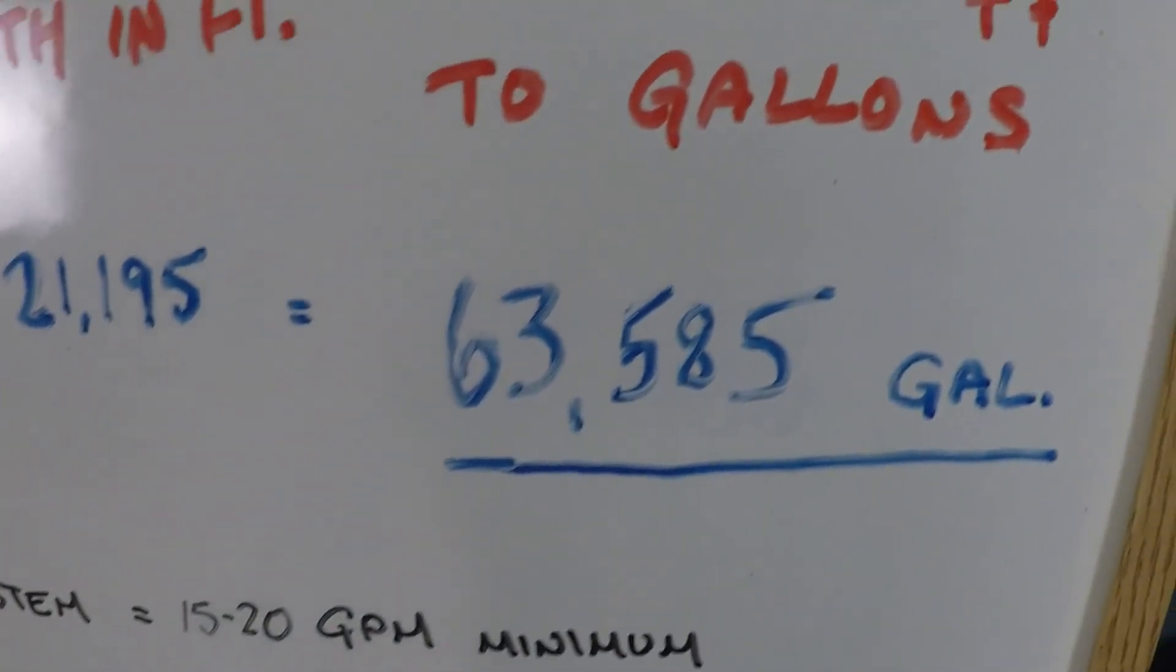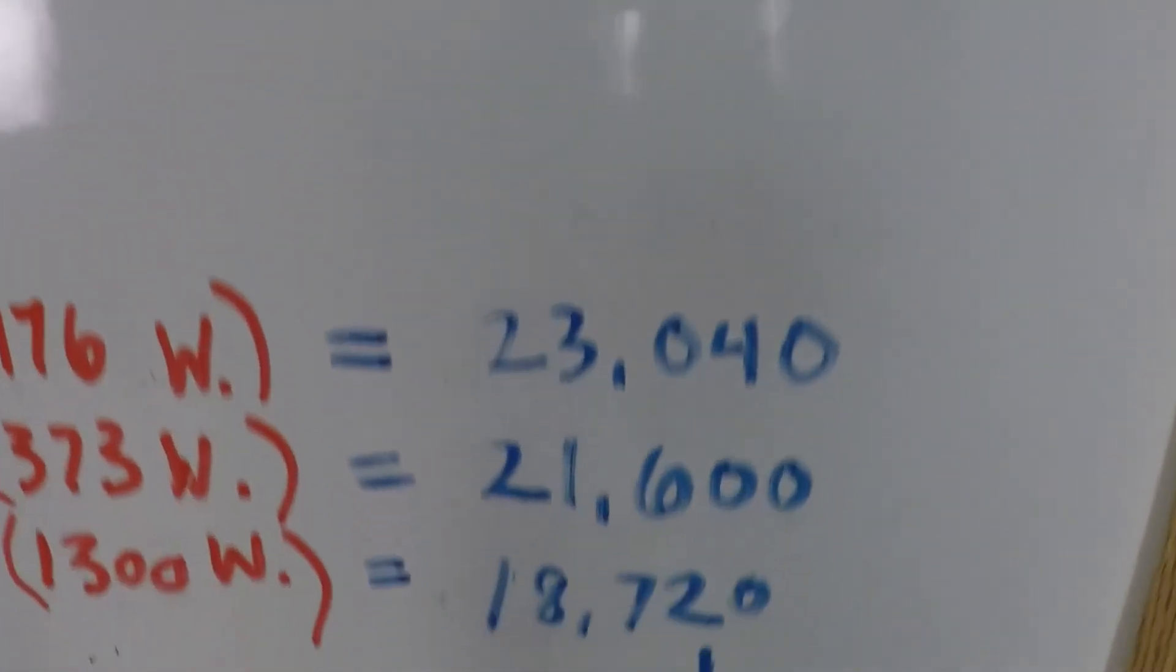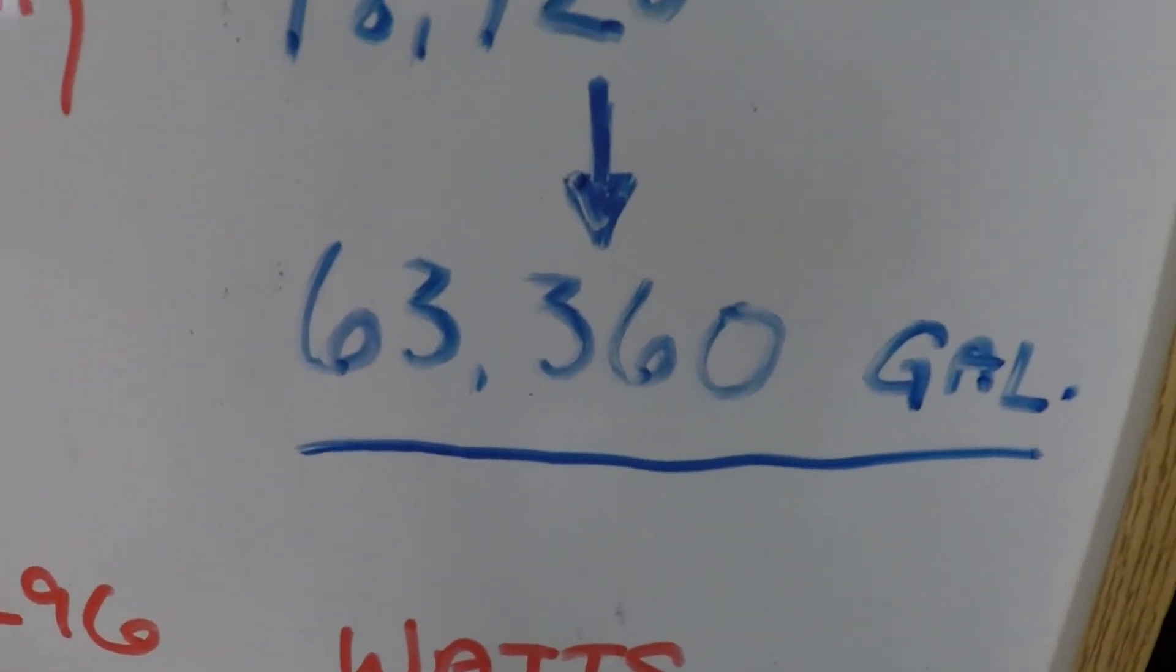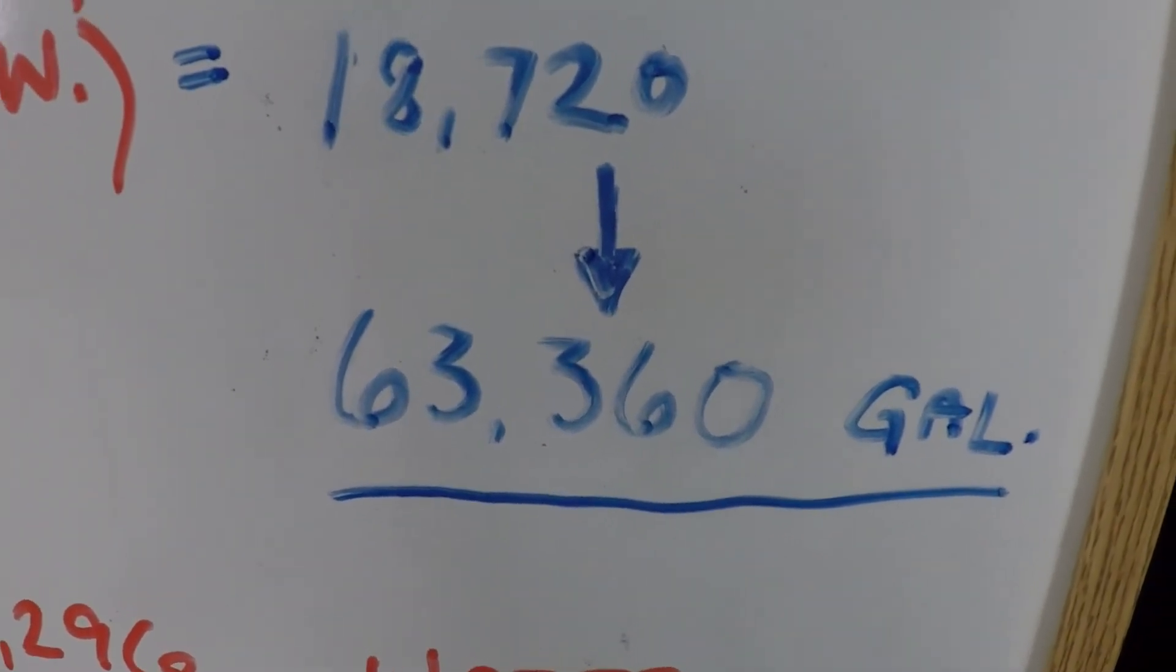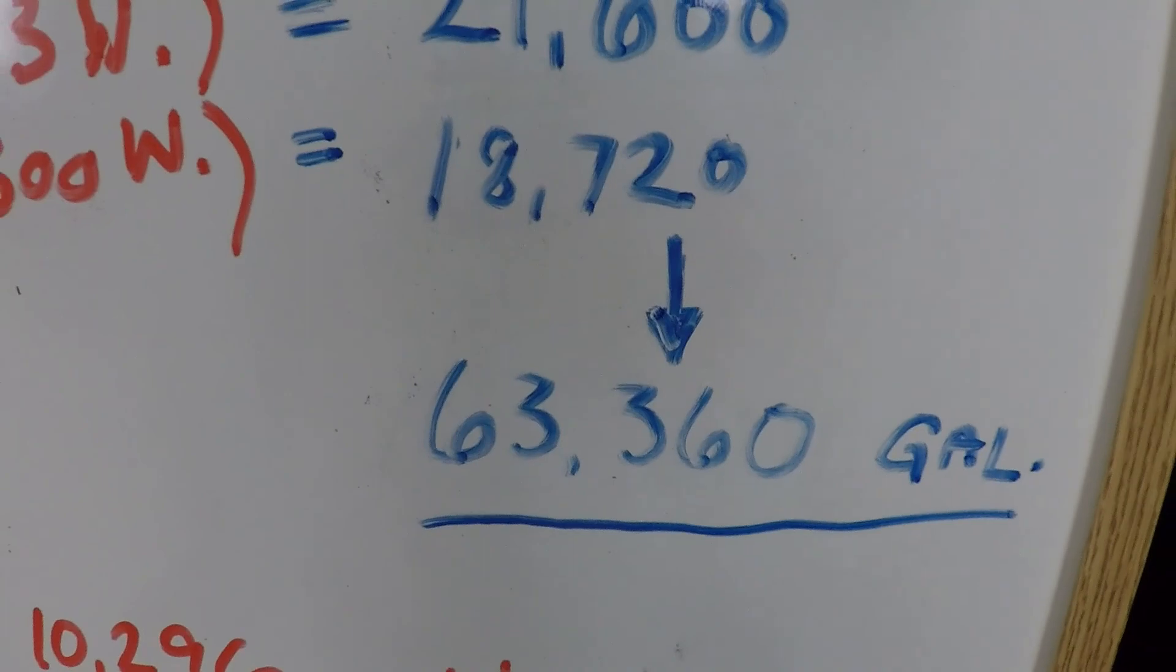10.3 kilowatts at 13 cents is $1.34 per day or just over $40 for a month of operation. And again, that's for three times the volume of this swimming pool being filtered every 24 hours.